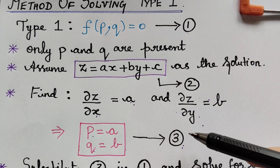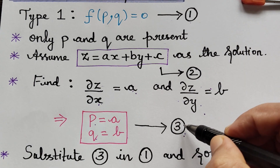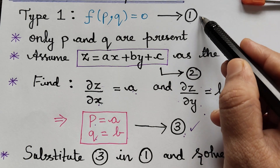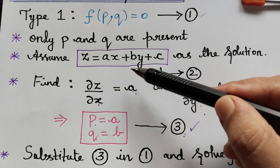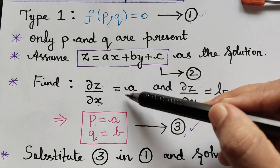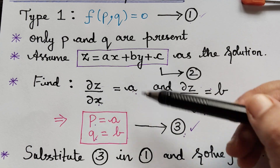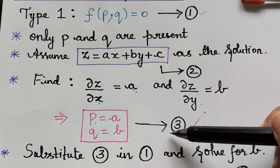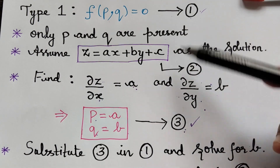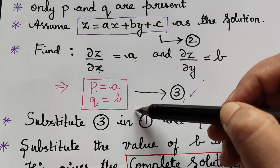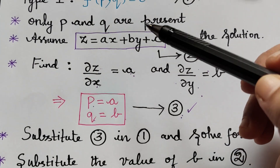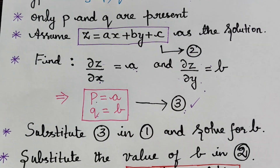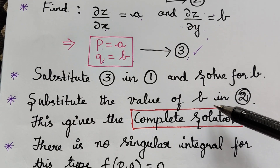After finding the first, second and third equations, we have to substitute the third equation into equation 1. These two steps will be the same for all problems we will be solving. After substituting equation 3 into equation 1, we will have an equation in terms of a and b, in which we have to solve for the value of b.